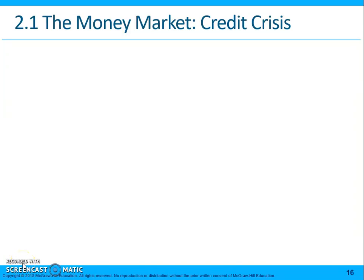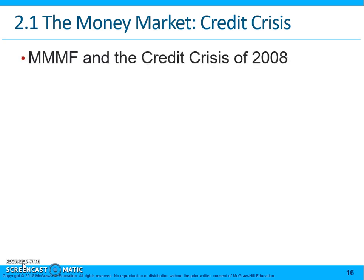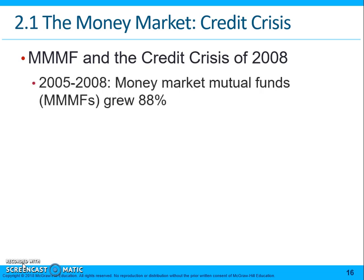In this section we're going to talk about the money market mutual fund crisis of 2008, and then we're also going to talk about the differences between yields and discount rates, especially between treasury bills, bonds, and notes. But let's start with the money market mutual fund crisis in 2008.